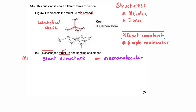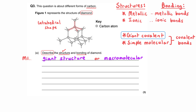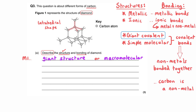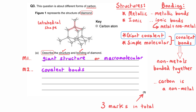For the bonding, there are three types it could be: covalent, ionic, and metallic. Everything made from only non-metals will be covalent, so diamond is a giant structure held together by covalent bonds — that's the second marking point. For extra detail, since there are two different forms of carbon, we need to enhance our answer by talking about how many covalent bonds there are per carbon atom.